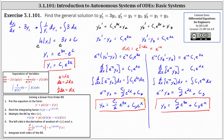We now have the general solution to the system of differential equations: y one equals c one e to the three x; y two equals c one divided by two e to the three x plus c two e to the x; and y three equals c one divided by two e to the three x plus c three e to the x. I hope you found this helpful.